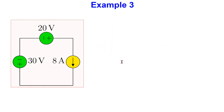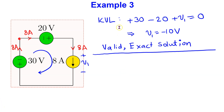Consider the next example shown here. We have two ideal independent voltage sources connected in series with a current source. Thus, the current through the 30 volt and the 20 volt sources is 8 amps, which is fine, and KCL is satisfied. For KVL, we can assume a polarity of the voltage across the current source as shown. Using passive sign convention, we can write the equation for this single loop circuit. We can solve to show that V1 is minus 10 volts, and this voltage drop is fine for the ideal independent current source. Thus, this interconnection is valid and also has an exact solution.